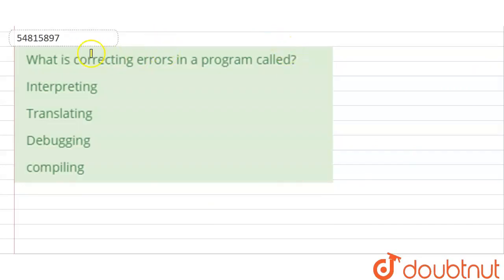Hello everyone, the question here is: what is correcting errors in a program called? When we correct the errors in a program, then what do we say?